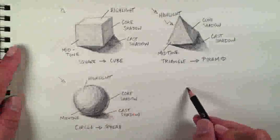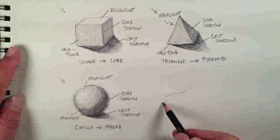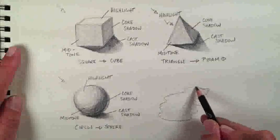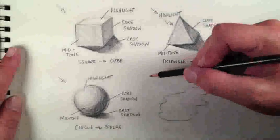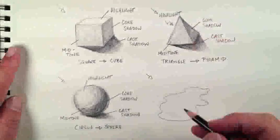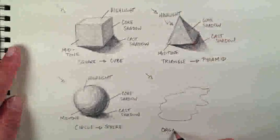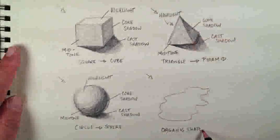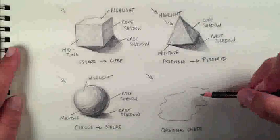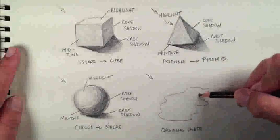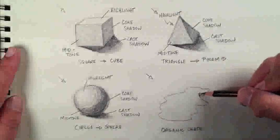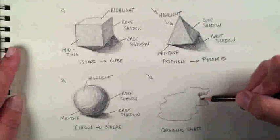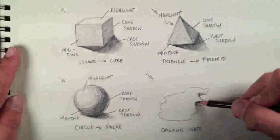You'll remember in the last video when we talked about shape, we talked about geometric and organic shapes. The problem is, a lot of the forms we're trying to create are not just geometric forms — they're organic forms. So let's take an organic shape and turn it into an organic form. Remember, we're trying to create the illusion of light, so we need shadow, a core shadow, a mid-tone, a highlight on the object, and a cast shadow that comes from it.